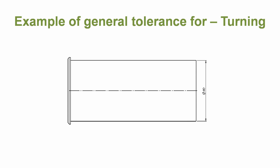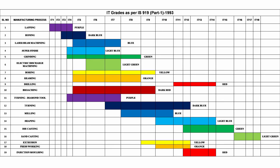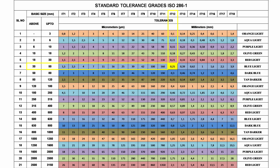Example of general tolerance for turning. Given a part for the turning process, the IT grade is serial number 12, shown in dark blue color — we require a draft manufacturing process, which is IT12. Dimension 40 is the basic size, which falls between 30 to 50 mm. The IT grade is IT12. From the chart, the tolerance is 0.25 mm. Divided by 2, that is 0.125 mm tolerance per side.